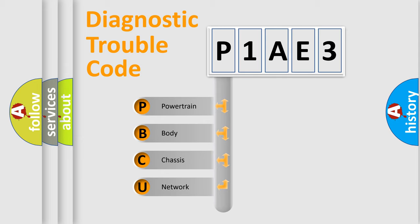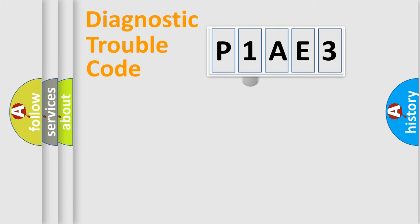We divide the electric system of automobile into four basic units: Powertrain, Body, Chassis, and Network. This distribution is defined in the first character code.